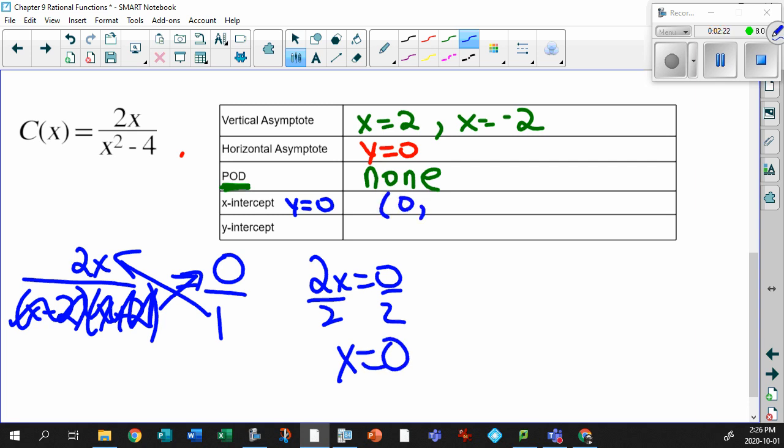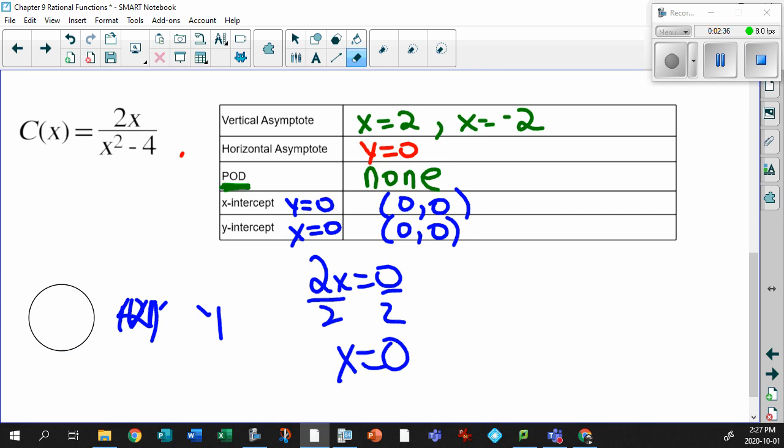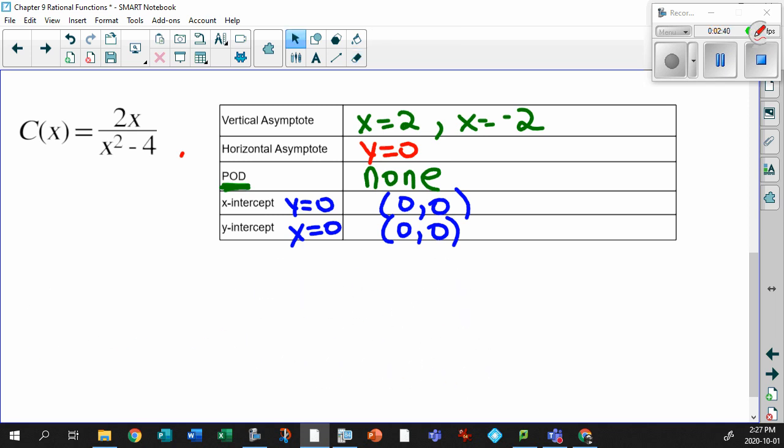So you've got an x-intercept at 0 and a y-intercept. Also, if you think about it, it's also going to be 0. Why? Because it's 0, 0, baby! Okay, if you don't believe me, check this out. Watch. You know what happens with a y-intercept. Y-intercept happens when x equals 0. So that means that's gone. 0. That's gone. 0. You have 0 over minus 4. Come on. That's a 0.